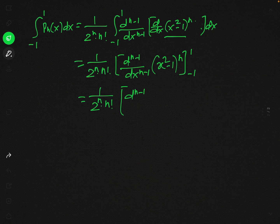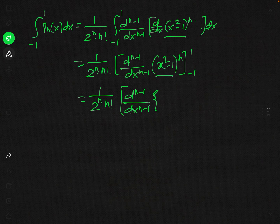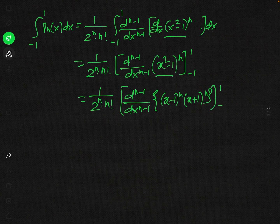Now we will simplify this: 1 over 2^n·n! times d^(n-1)/dx^(n-1) of (x² - 1)^n. On the basis of the formula a² - b² = (a - b)(a + b), we can write (x² - 1)^n as (x - 1)^n · (x + 1)^n, with limits 1 and minus 1.